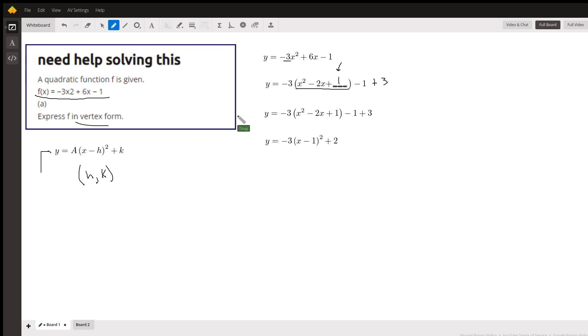And so there's what it looks like after we factored out the leading coefficient, completed the square, kept the equation in balance. And now all that remains is to rewrite this trinomial as a binomial squared. So x minus 1, the quantity squared. And then combine these two constants out here, plus 2.